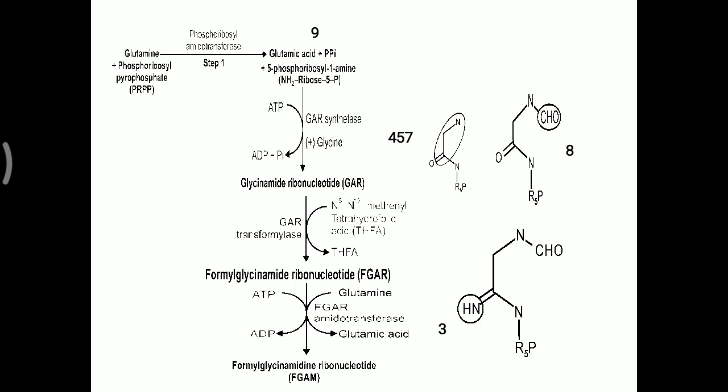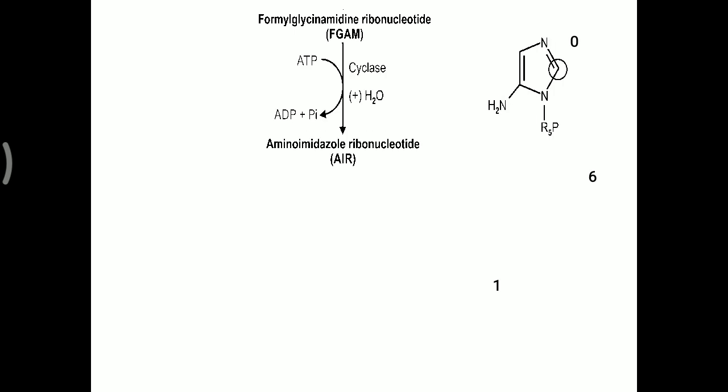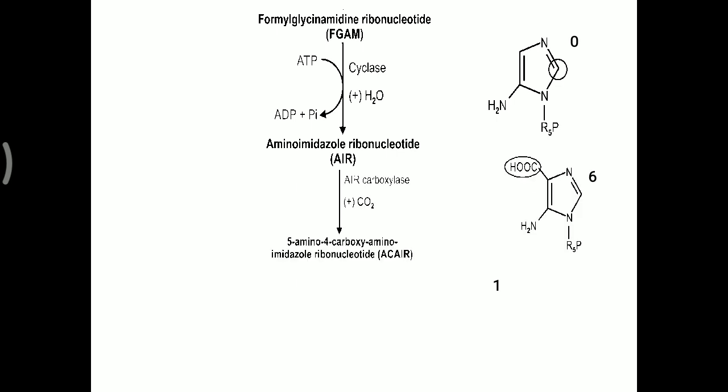Further, formylglycinamidine ribonucleotide is converted into aminoimidazole ribonucleotide (AIR). Ring closure requires ATP, via cyclase enzyme with H2O added. Then this aminoimidazole ribonucleotide is converted into ACR with the addition of carbon dioxide — enzyme AIR carboxylase, which adds the 6th carbon over the molecule.